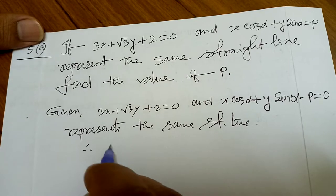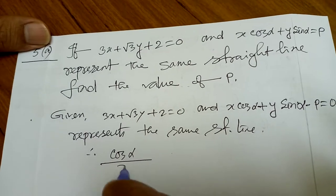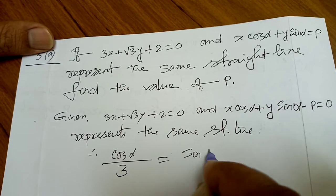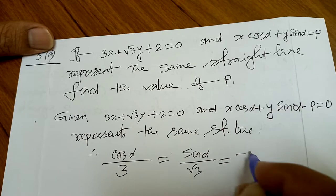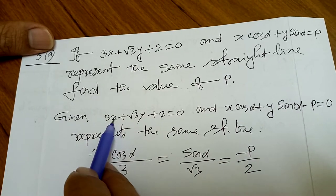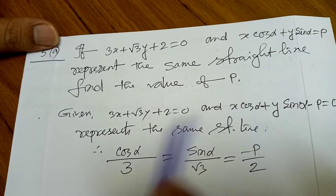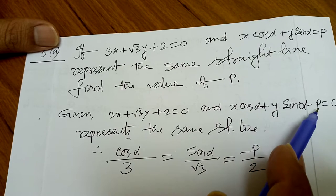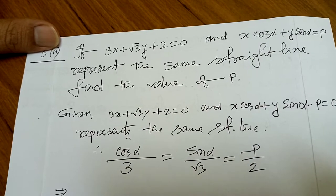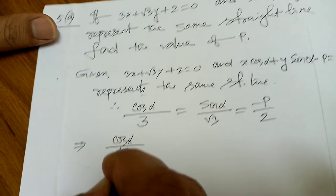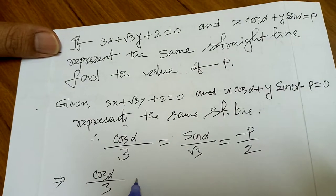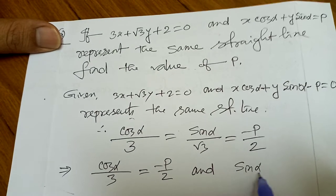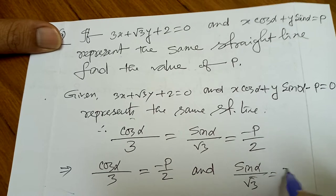That means cosα/3 = sinα/√3 = −p/2, because the coefficient of x is 3, coefficient of x is cosα, so cosα/3 = sinα/√3 = −p/2. Here the constant is 2, so we write cosα/3 = −p/2 and sinα/√3 = −p/2.